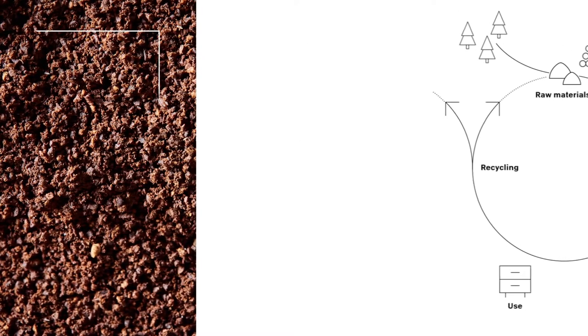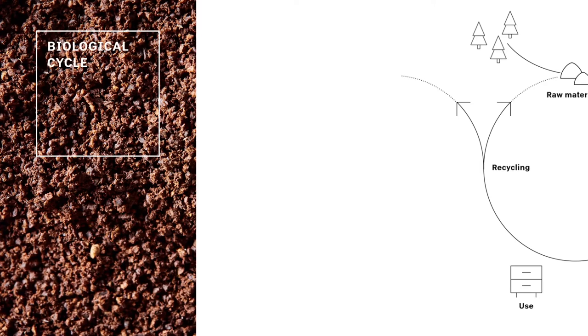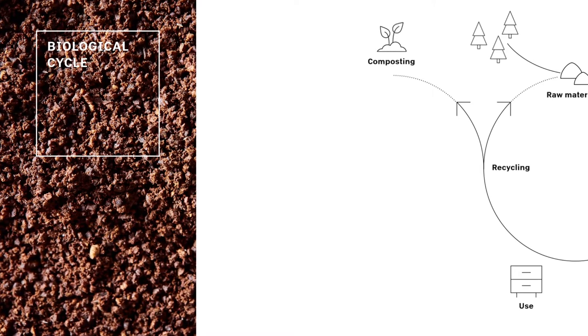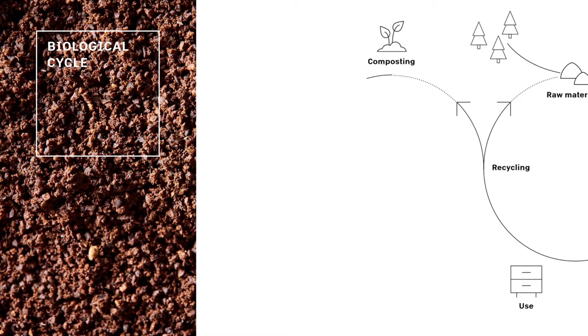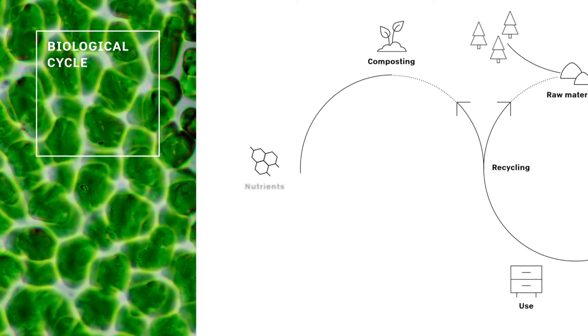When a material from the technical cycle no longer meets the quality standards for renewed use as a raw material, it is introduced into the biological cycle. It is therefore used as the basis for the creation of new biological raw materials.